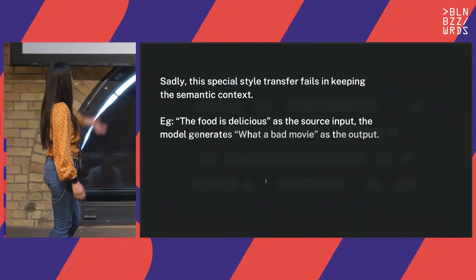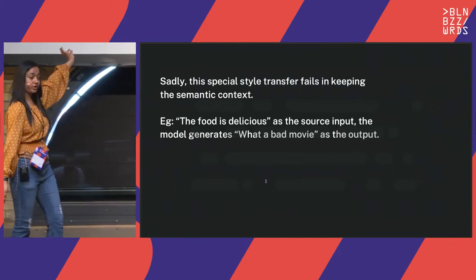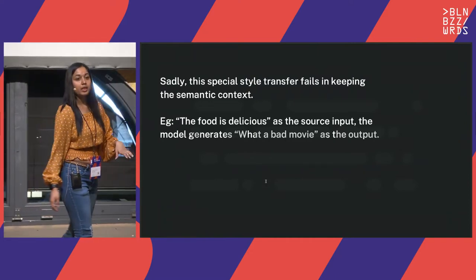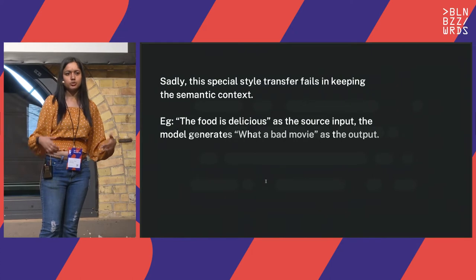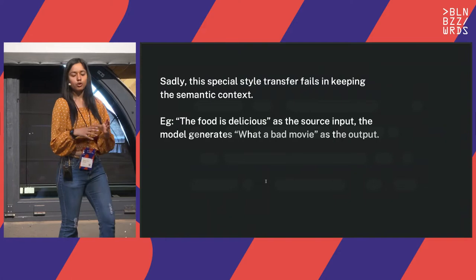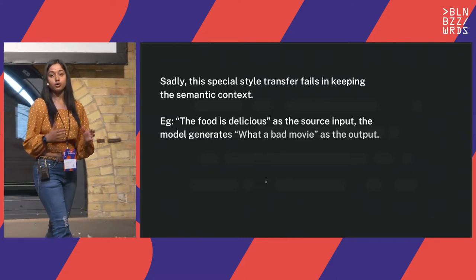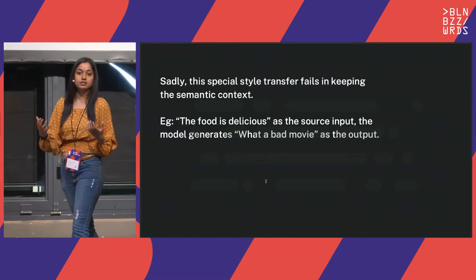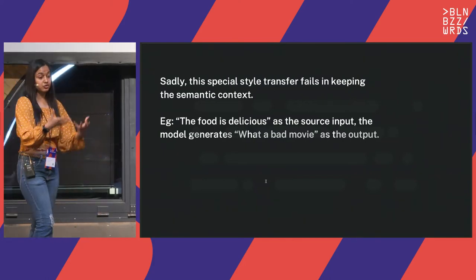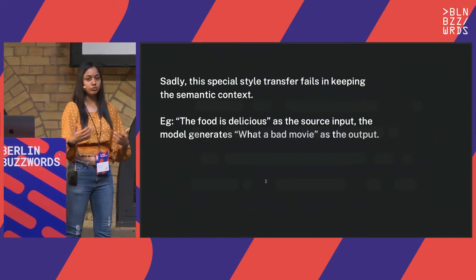For example, 'the food is delicious' is the source input, and what the model generates is 'what a bad movie it was' — which is the output. Generally when we do normal sentiment analysis we just try to identify which sentiment is present in the corpus; we don't try to change it or manipulate different kinds of styles to extract more semantic information. That is where sentiment-to-sentiment translation plays a huge role.